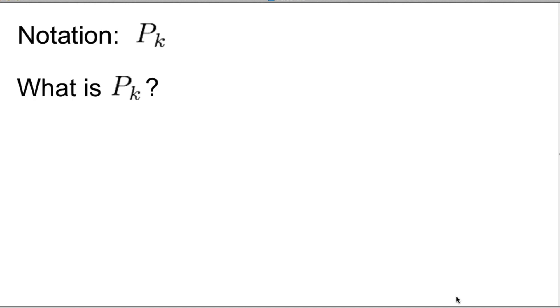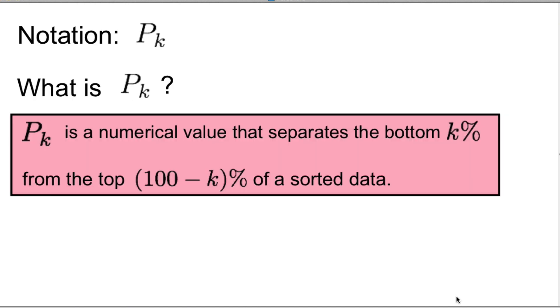So, what is P_k? P_k is a numerical value that separates the bottom k percent from the top 100 minus k percent of a sorted data.